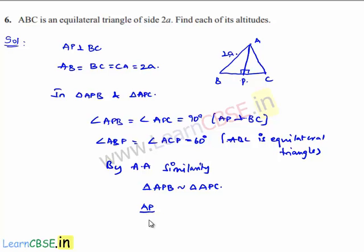Here we get AP by AP is equal to PB by PC is equal to AB by AC, which implies we know that AP by AP is nothing but 1, and AB by AC is also nothing but 1 as AB equal to AC in equilateral triangle. So we can say that PB by PC is equal to 1, which implies PB is equal to PC.